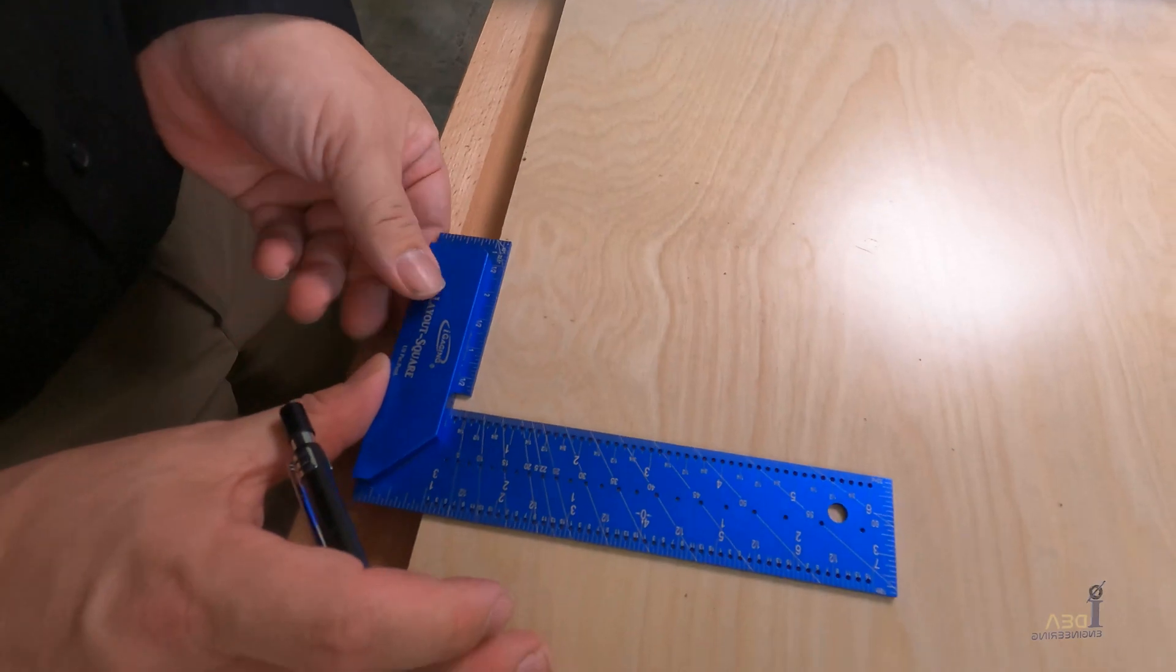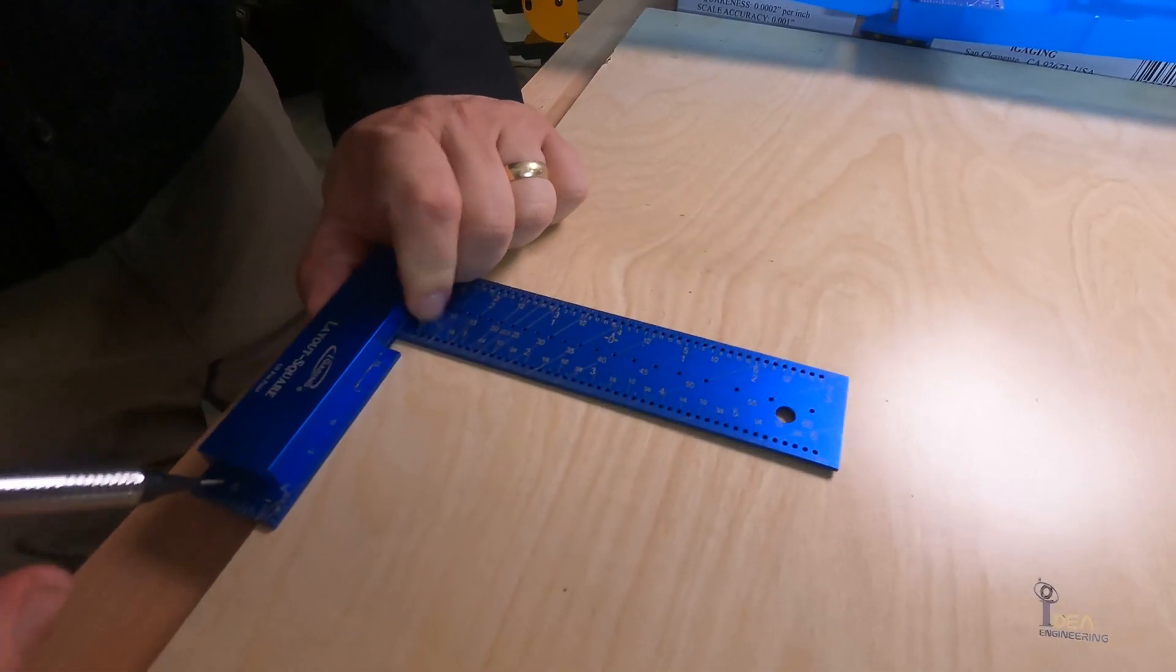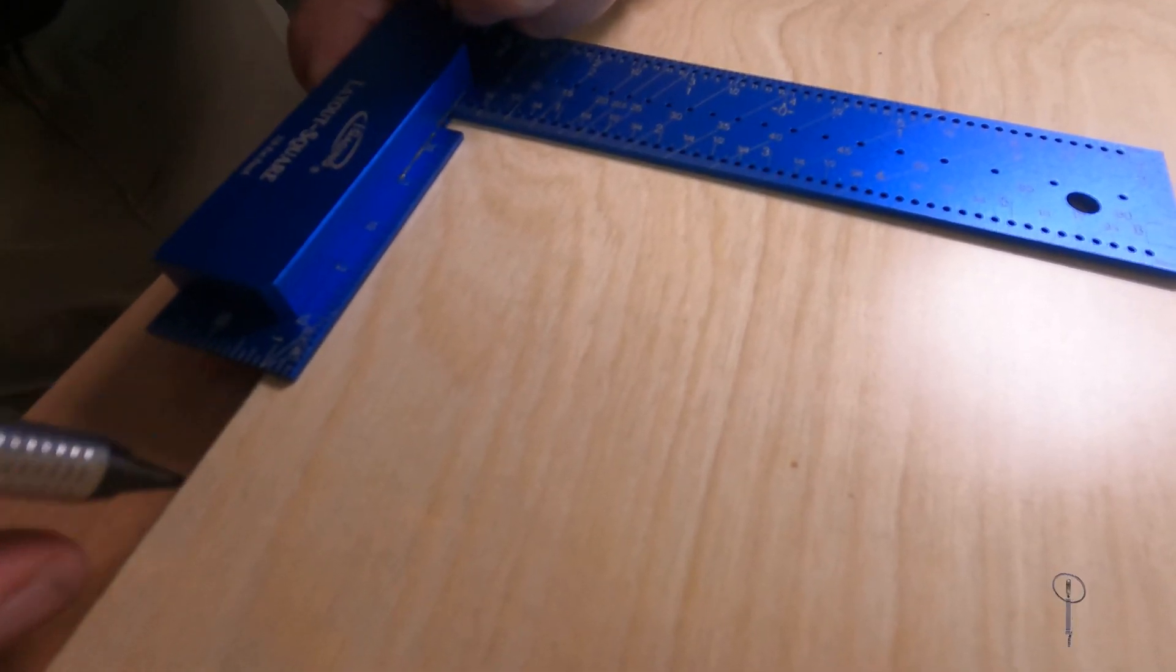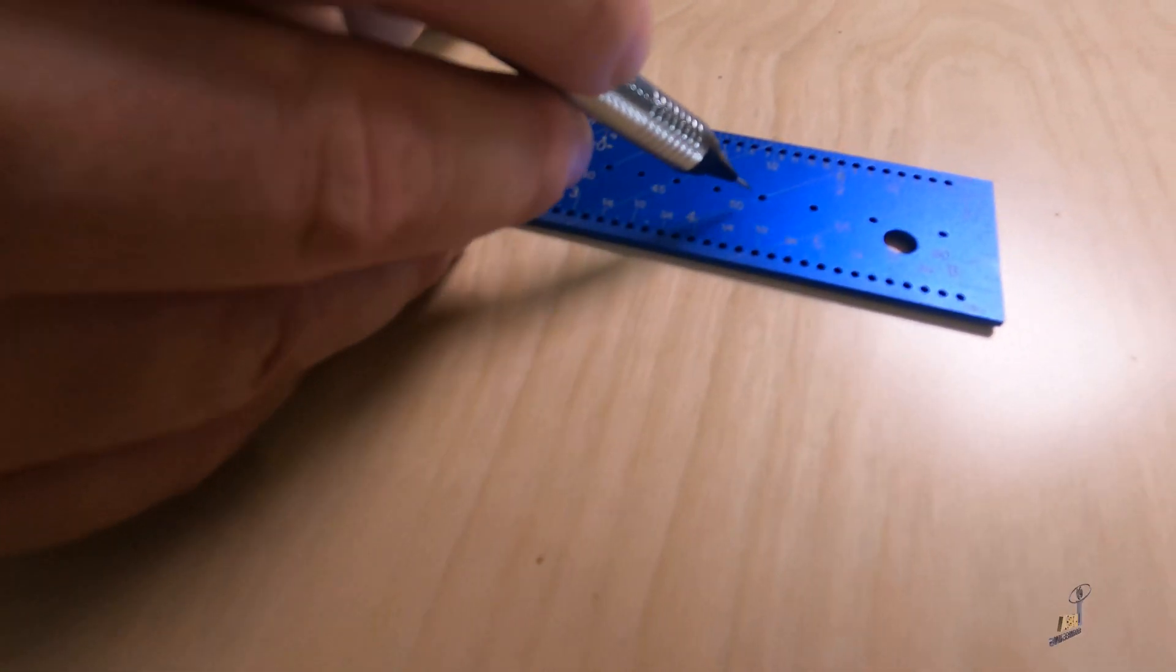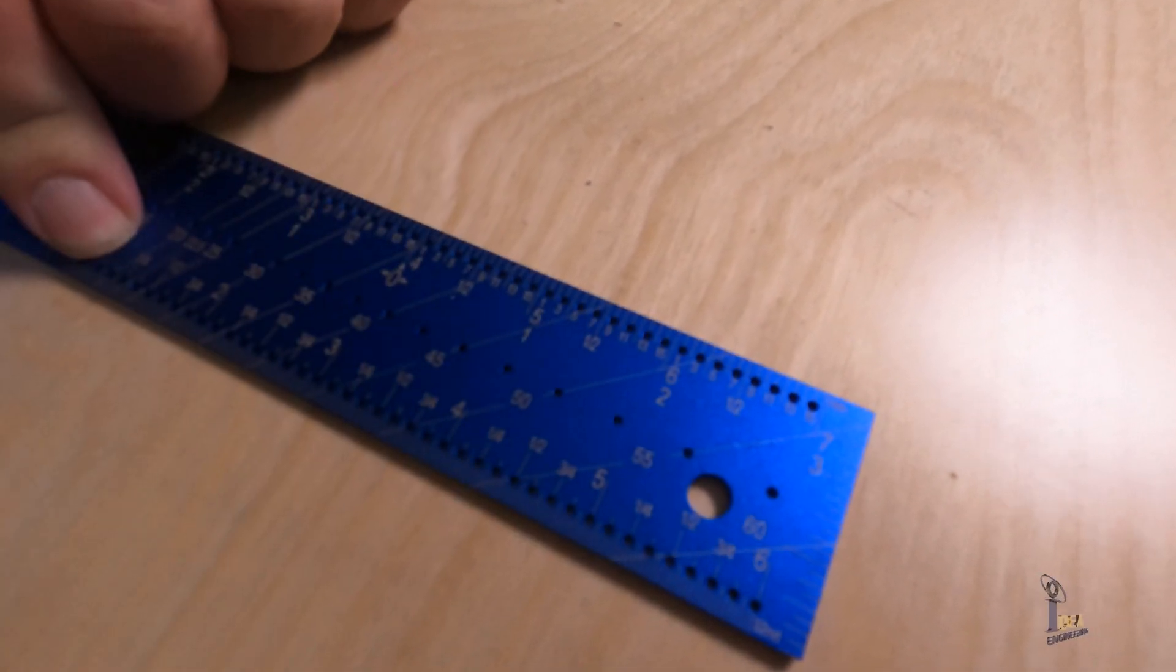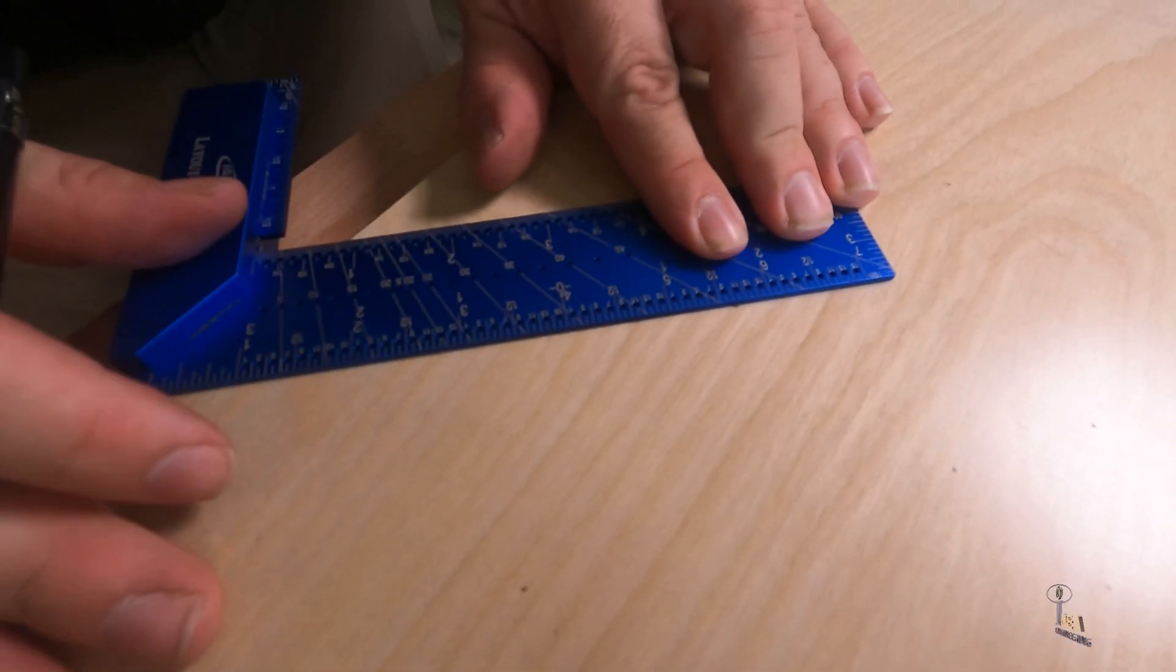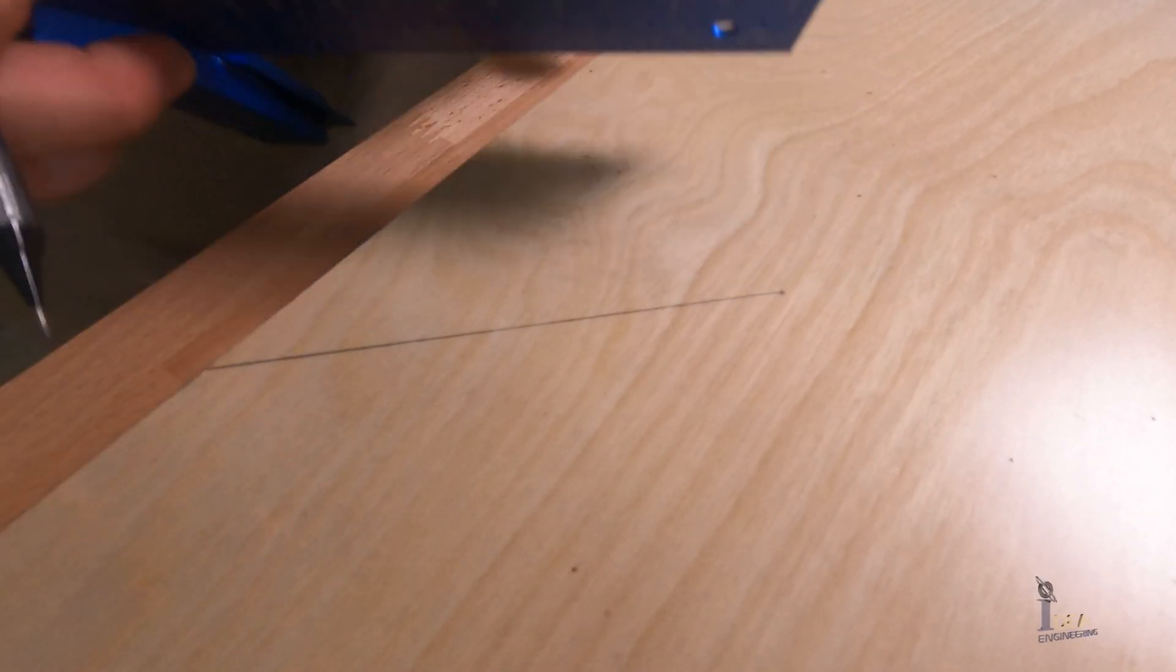But the cool thing about this is, to measure the angle, we go from this point which coincides with the flat side. From that point, to measure any angle, just put it in the hole. Say you want to do a 45-degree angle, so we'll measure that hole there. You'll see there's the dot, and you go back to the original spot and measure our 45-degree angle.